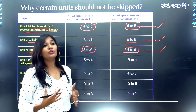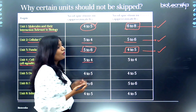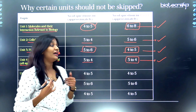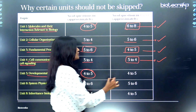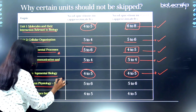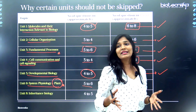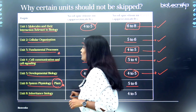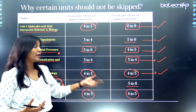Unit four — cell communication and cell signaling — gives three to four questions in both Part B and Part C. Unit five — developmental biology or embryology — gives four to five questions in Part B and four to five in Part C. Unit six — system physiology in plants — gives five to six questions in Part B and approximately five to six in Part C. Unit eight — inheritance biology or genetics — gives four to five questions in Part B and four to five in Part C, with typically more questions in Part C.